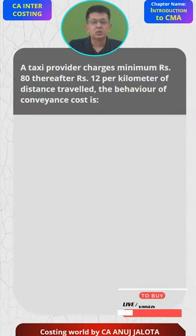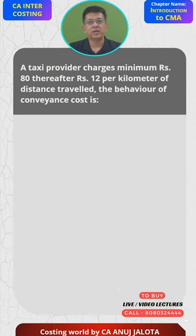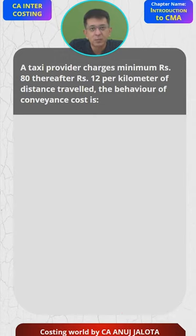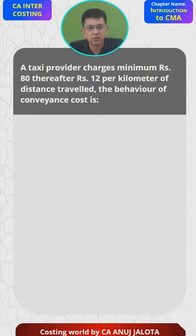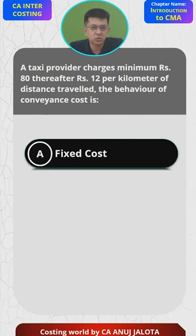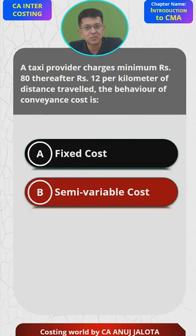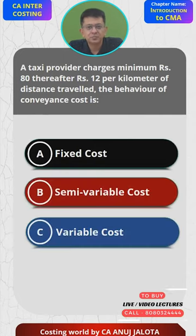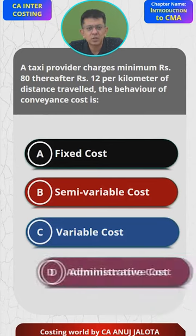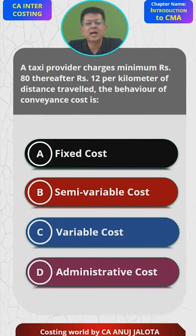Today's question is: a taxi provider charges a minimum fare of 80 rupees and thereafter 12 rupees per kilometer of distance traveled. The behavior of this conveyance cost is — option A: fixed cost, B: semi-variable cost, C: variable cost, and D: admin cost.